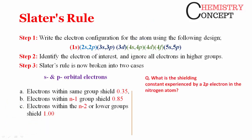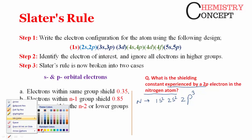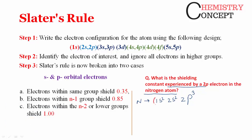Let's find the shielding constant experienced by the 2p electrons in the nitrogen atom. First, write the electronic configuration of nitrogen: 1s², 2s², 2p³. Next, arrange them in groups: [1s²] [2s², 2p³]. Now follow the rules.